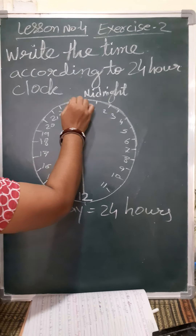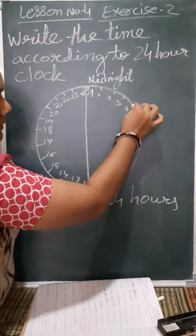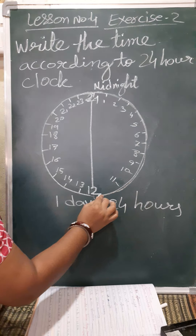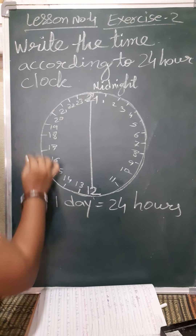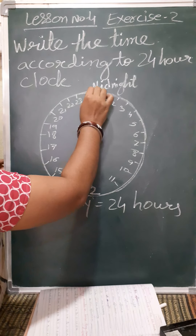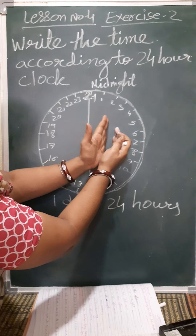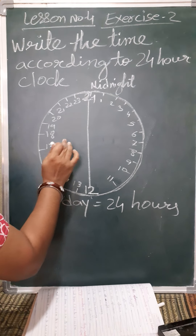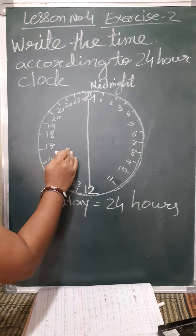See, this is a day. I have drawn one circle here. This complete circle is a day. That day is divided into two parts — you know that is 12 hours. This part is 12 hours and this part is 12 hours.